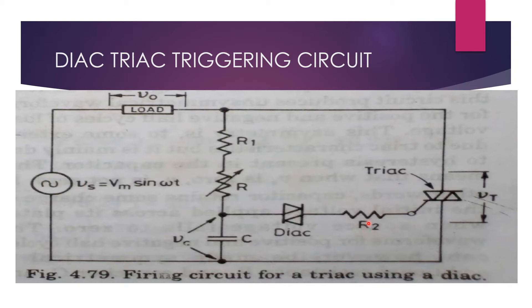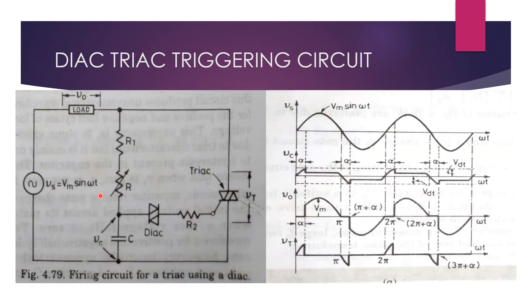Resistor R2 limits the current in the DIAC and TRIAC gate when DIAC turns on. The value of C and potentiometer R are so selected as to give a firing angle range of nearly 0 degree to 180 degree.